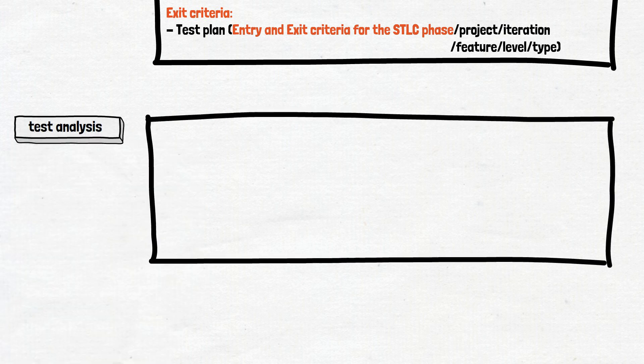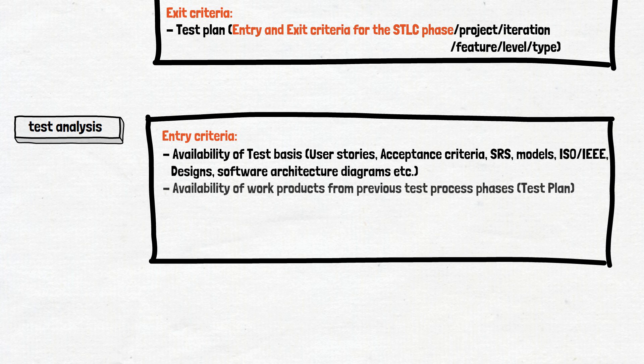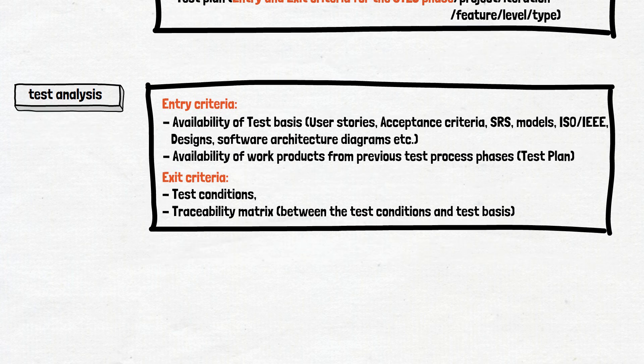The next stage is test analysis. The entry criteria for test analysis are also the presence of requirements — the test basis. But if for test planning it was not necessary to have very detailed requirements, then in test analysis it is necessary to have final requirements, diagrams and schemes based on which the product will be developed. Another important entry criteria is the presence of a test plan, meaning that the test planning activity has already been completed. The exit criteria for test analysis are test conditions and the traceability matrix between the test conditions and test basis. At the end of this phase is a detailed list of what to test.